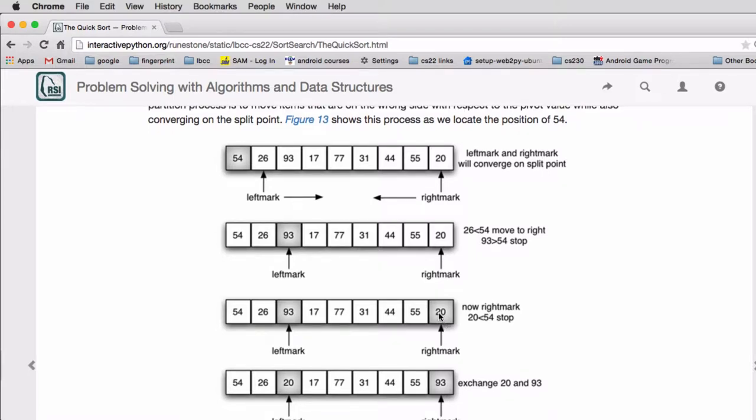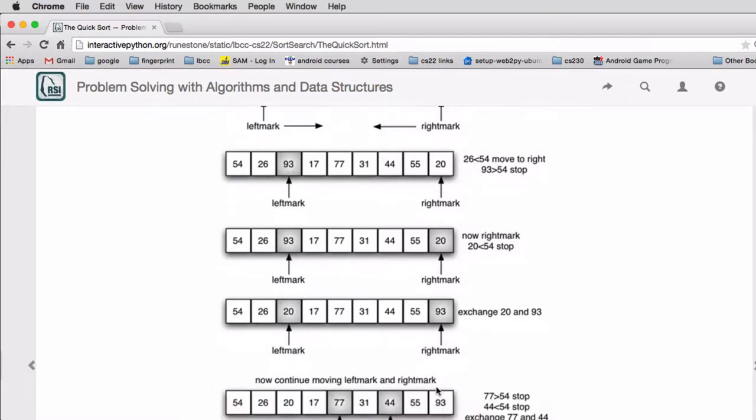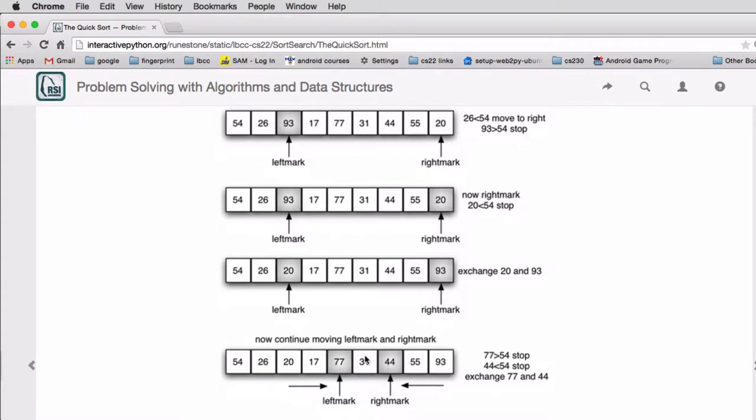So we swap. We actually advance the left mark till this is out of place, and we advance the right mark till we find one out of place and we swap those two. So basically the left mark is going to look for the first number that's greater than 54 being out of place. And the right mark is going to be advancing looking at the first number that's less than 54 meaning it's out of place. And so we swap the two as we do here. And then we continue looking and we find the next two that are out of place and we swap them.